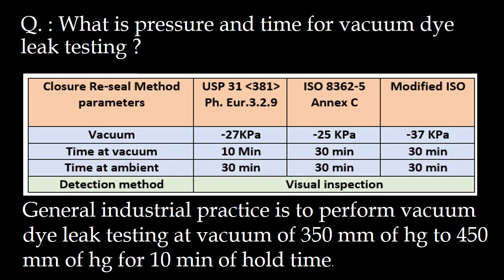Welcome. We will start with a very basic and most important question: what is pressure and time for vacuum dye leak testing? Refer to the table below for recommended parameters for vacuum time and time at ambient as per USP 31 and ISO 8362 and modified ISO. However, the general industrial practice is to perform vacuum dye leak testing at a vacuum of 350 to 450 mmHg for 10 minutes hold time.